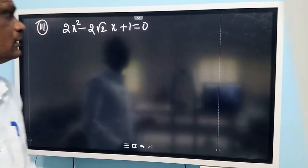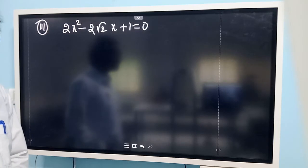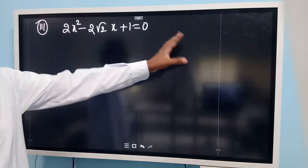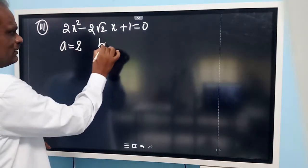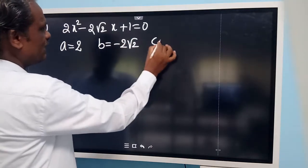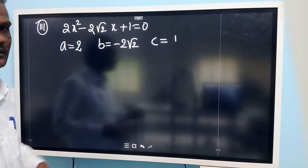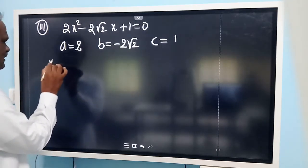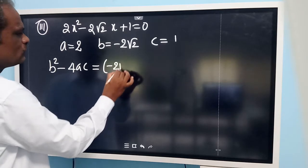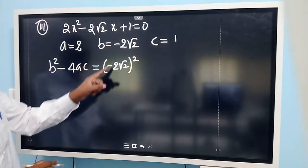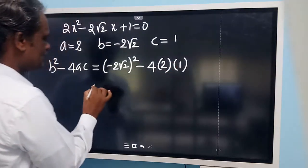Now look at this question: 2x squared minus 2 root 2 times x plus 1 equals 0. It is a quadratic equation. Comparing with the standard form, a value is 2, b value is minus 2 root 2, and c value is plus 1. Before substituting in the quadratic formula, let us find out the value of b squared minus 4ac. b squared is minus 2 root 2, all squared, minus 4 into a which is 2 and c which is 1.